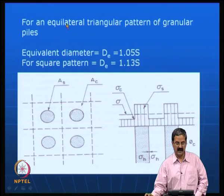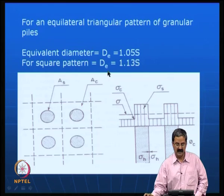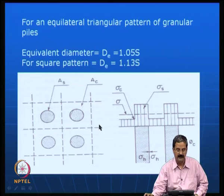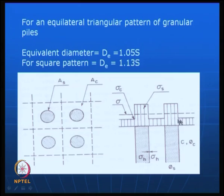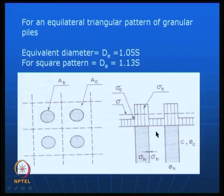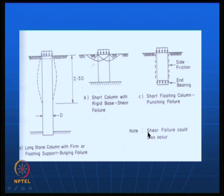For equivalent diameter in a triangular pattern, it is 1.05 times S, where S is the spacing of stone columns. For a square pattern, the equivalent diameter is 1.13 times S. The stone column is completely stone, and the load by the column is a higher number, whereas the load in the clay is lower — you get an average. Sigma_S is higher and sigma_C is lower, giving an average. This is the load sharing mechanism — because the soil is soft it cannot take load, the stone will take more.